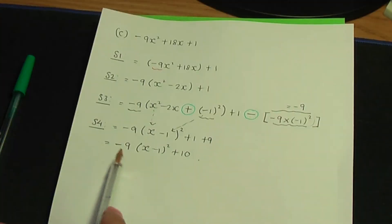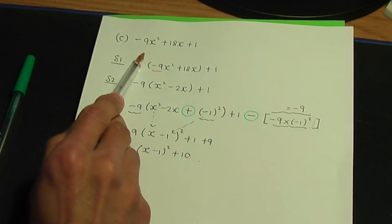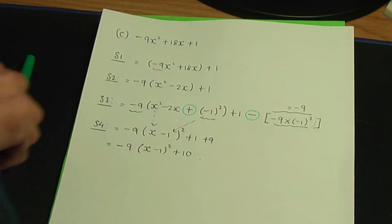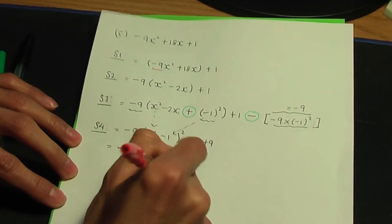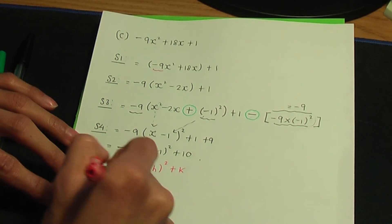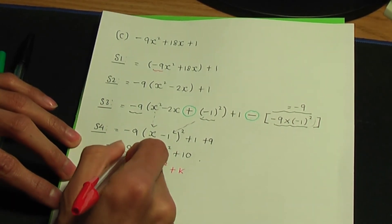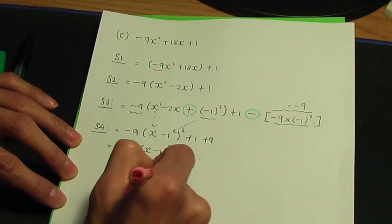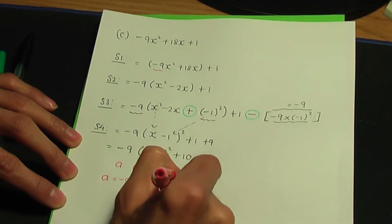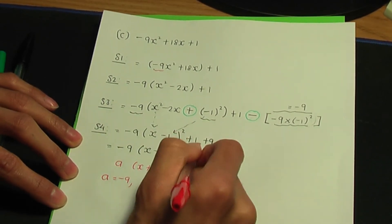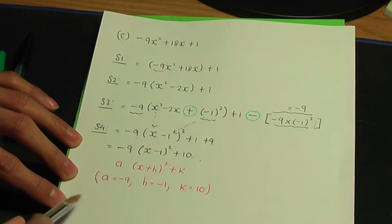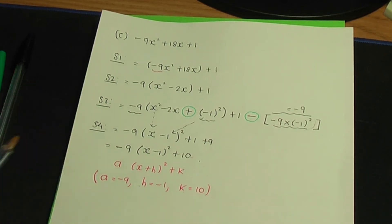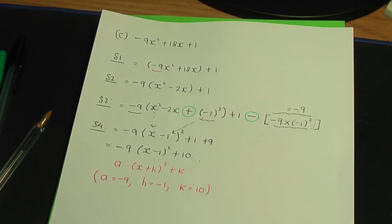The solution is minus 9 times (x minus 1) squared plus 10. Comparing with a(x+h)²+k, the a value is minus 9, h is minus 1, and k is plus 10. So these are the values of a, h and k when we complete the square. That completes this example.